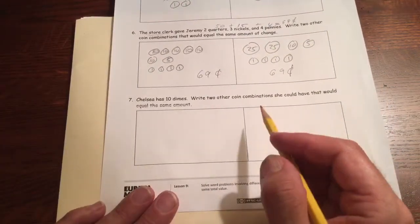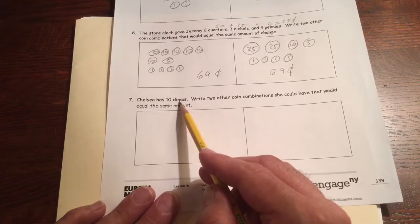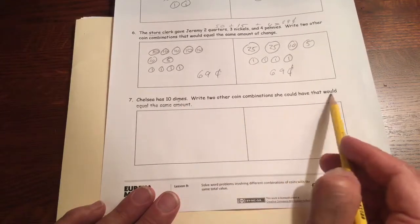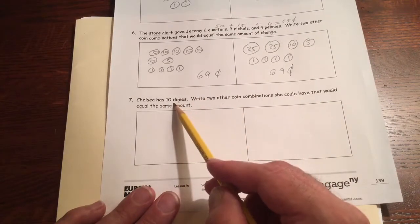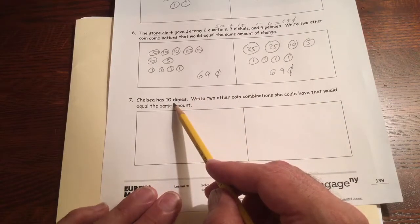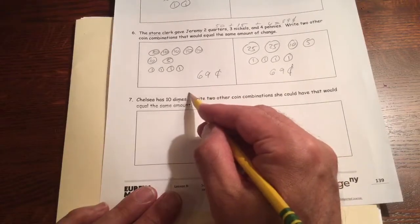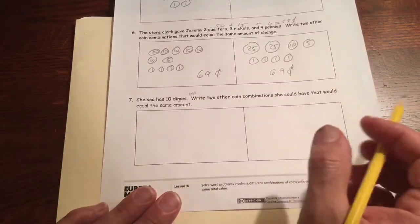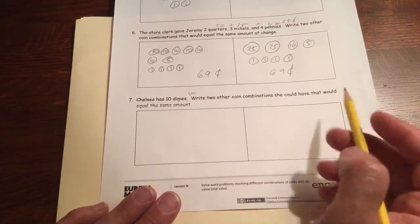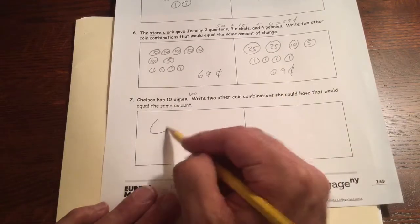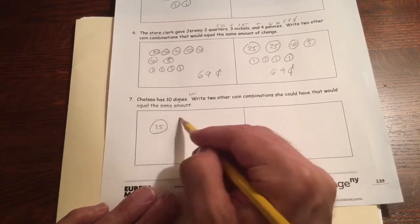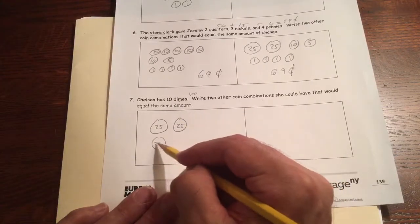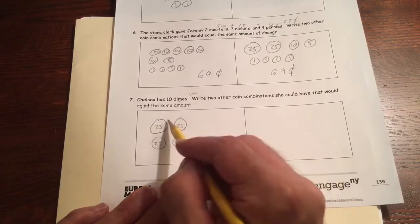And then finally we have Chelsea. She has 10 dimes. Right? Two other coin combinations she could have that would equal the same amount. Well, 10 dimes, that's 10 tens. And you might know that by now. That's the same as 100 cents or a dollar. So two other combinations that would add up to a dollar besides 10 dimes. Four quarters. Two for 65 is 50. Two for 50. Two for 50. Because.